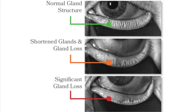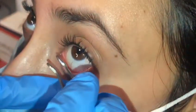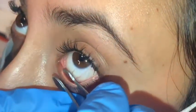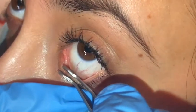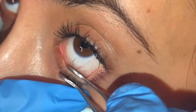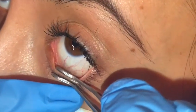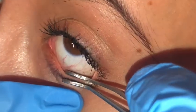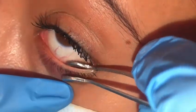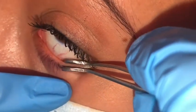In this first case, as we express the meibomian oil glands, we see a nice, clear oil easily expressed from the glands. These glands are in great shape.